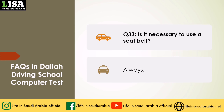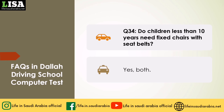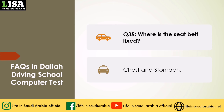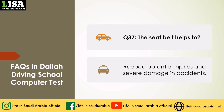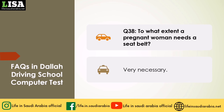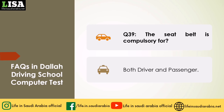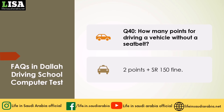Q33: Is it necessary to use a seat belt? Answer: Always. Q34: Do children less than 10 years need fixed chairs with seat belts? Answer: Yes, both. Q35: Where is the seat belt fixed? Answer: Chest and stomach. Q36: Saudi traffic rules require both the driver and passengers to use the seat belt? Answer: On all roads. Q37: The seat belt helps to? Answer: Reduce potential injuries and severe damage in accidents. Q38: To what extent does a pregnant woman need a seat belt? Answer: Very necessary. Q39: The seat belt is compulsory for? Answer: Both driver and passengers. Q40: How many points for driving a vehicle without a seat belt? Answer: 2 points plus SAR 150 fine.